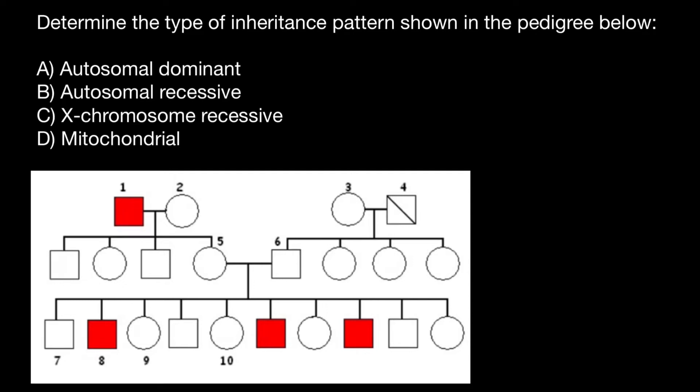Hello and welcome to Nikolai's genetics lessons. Today's question is: determine the type of the inheritance pattern shown in the pedigree below. Just looking at this pedigree, I can say instantly that this is an X-linked recessive genetic disorder.